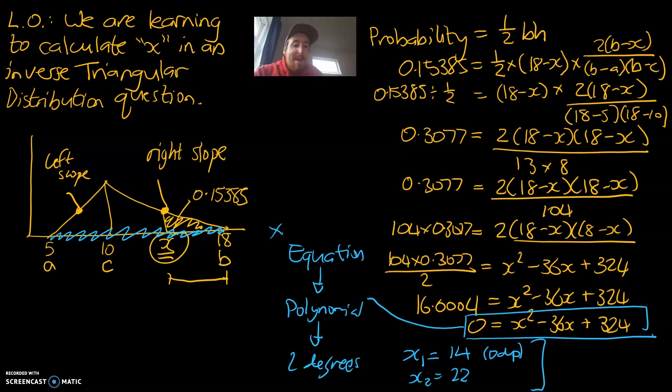So that means that x equals 22 is actually a false answer. So that means the final answer, x equals 14, is the answer. So that means the probability that x is above 14, that is equal to 0.15385. And that there would be our final answer.